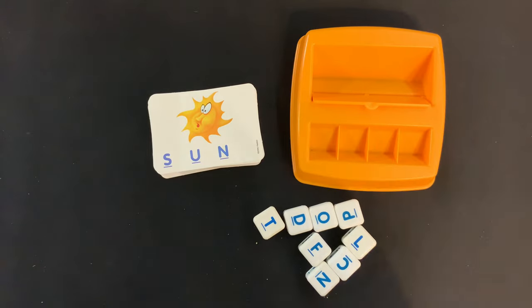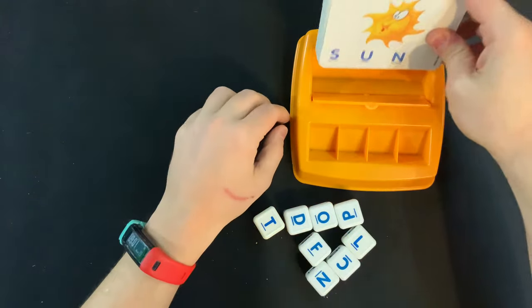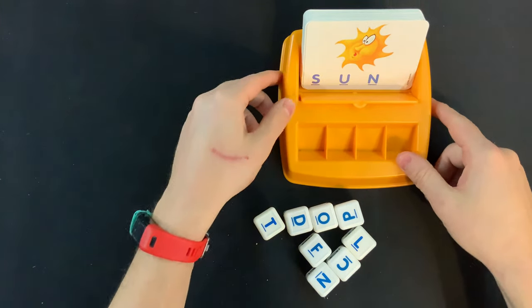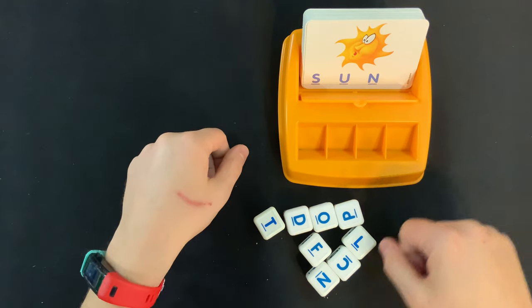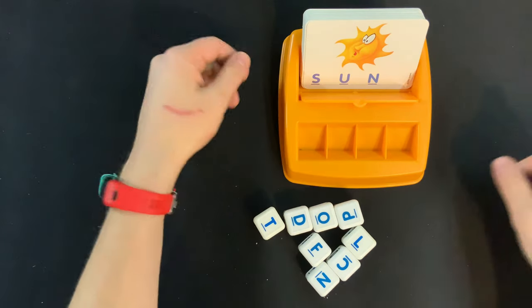So the first one is called Match It Spell It. This is a simple letter matching game. Essentially what you're going to do is you're going to put all these up like so. You will not be placing the flap over the words. And then the task is for the child to figure out how to spell the word. So what you're going to do is point to the picture, say what is this? They'll say it's the sun, and then you'll spell it out: yeah, the sun.